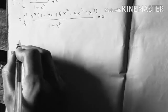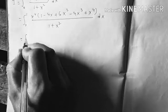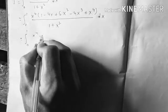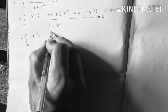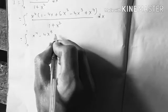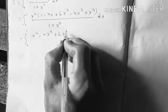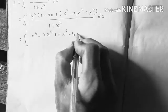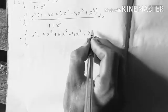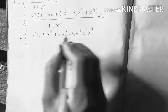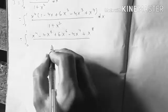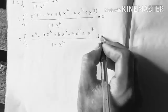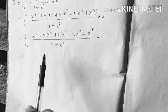After multiplying x to the 4 through the numerator, we get the integral from 0 to 1 of (x⁴ minus 4x⁵ plus 6x⁶ minus 4x⁷ plus x⁸) over (1 plus x squared), dx.